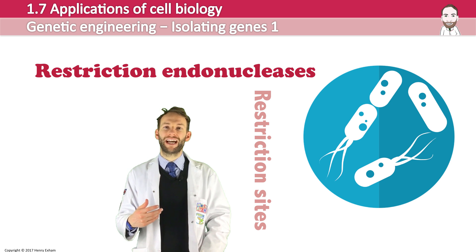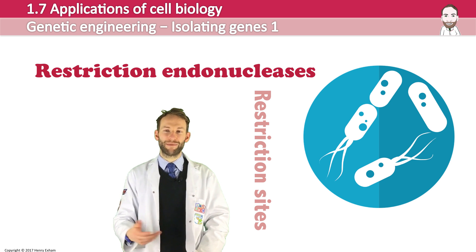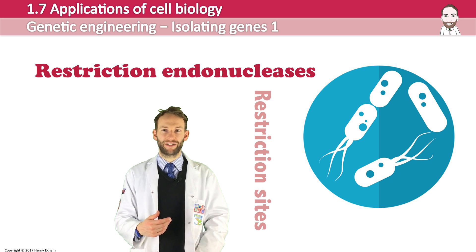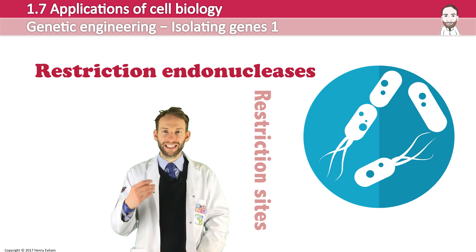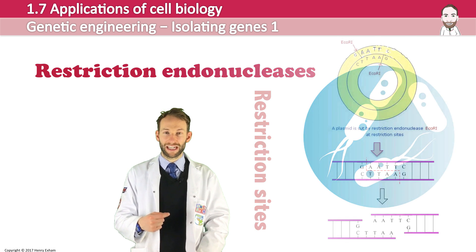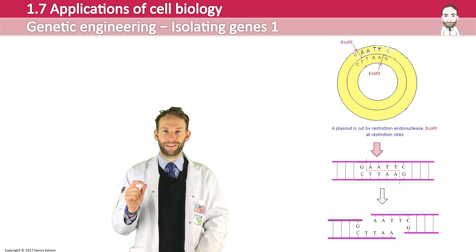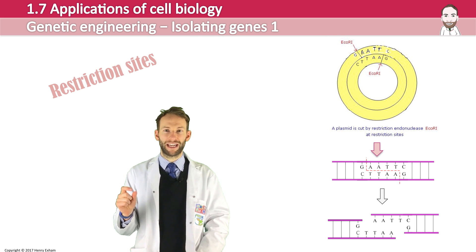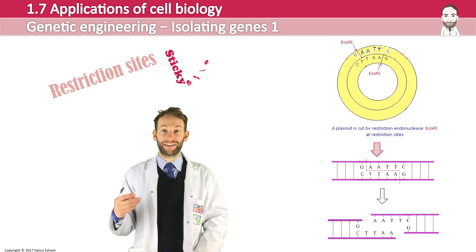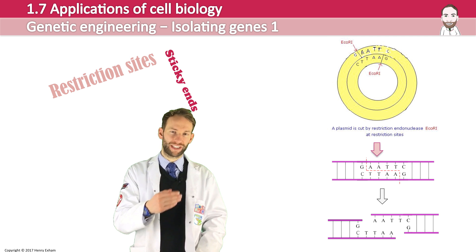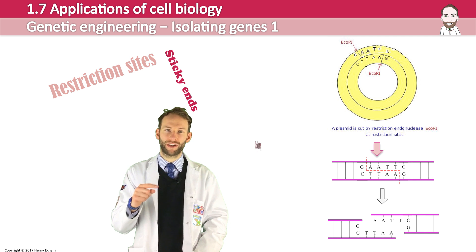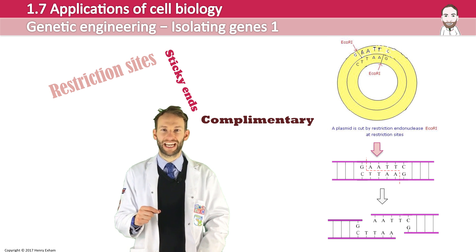The bacteria have these special enzymes which they use to destroy viral DNA without damaging themselves. There are many different types of restriction endonucleases found in various species of bacteria, and they each cut DNA at different restriction sites. They usually leave short overhangs of unpaired bases which we call sticky ends. These join very easily to other complementary sticky ends, providing a way of patching sections of DNA together.